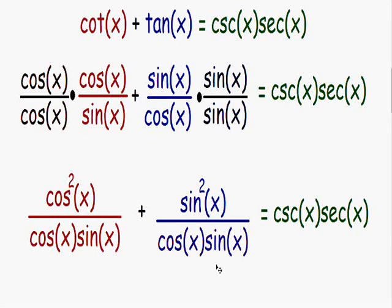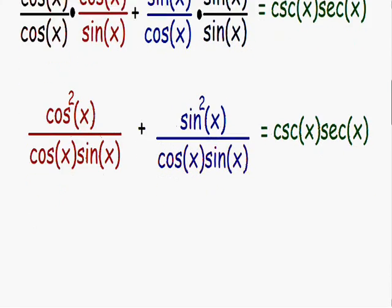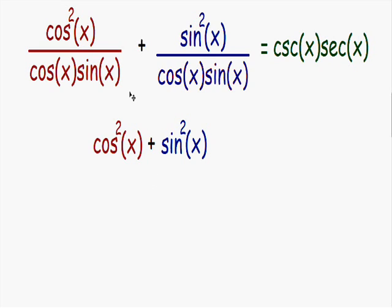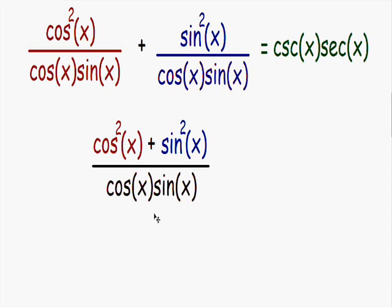Now that we have common denominators, we can add these two fractions together. When adding two fractions, you just add the numerators, so in the numerator we have cosine squared of x plus sine squared of x — that can't be simplified yet so it stays the same. The common denominator stays the same, giving us cosine of x times sine of x in the denominator.